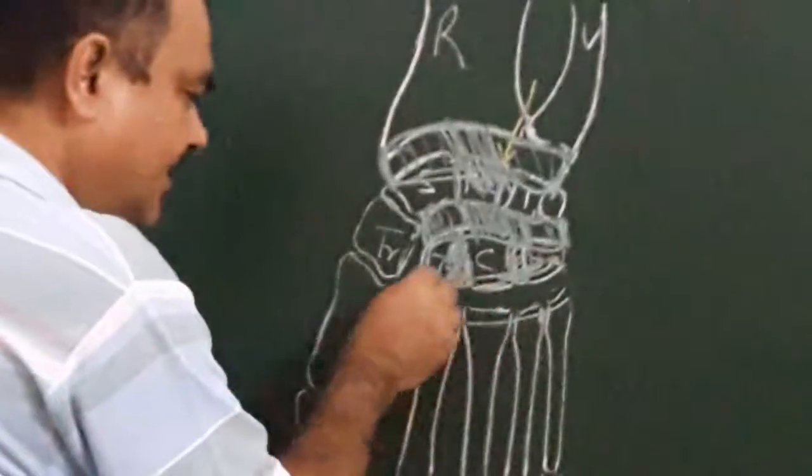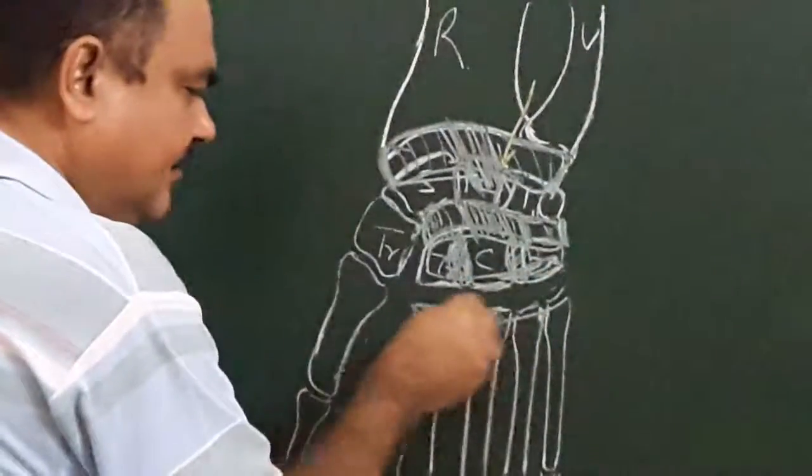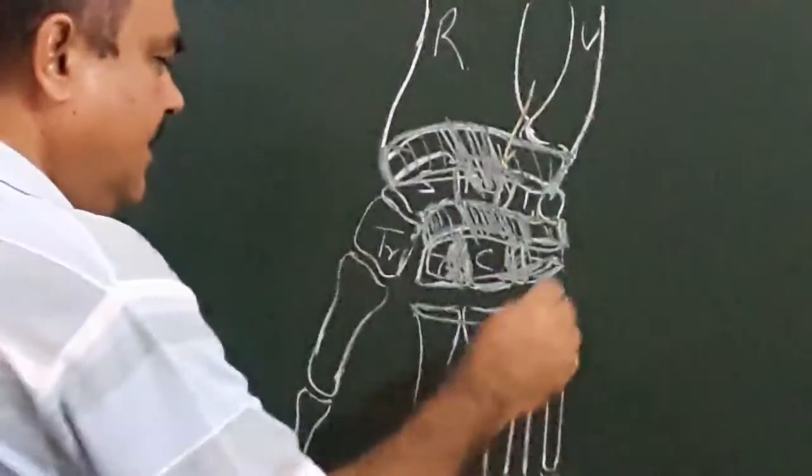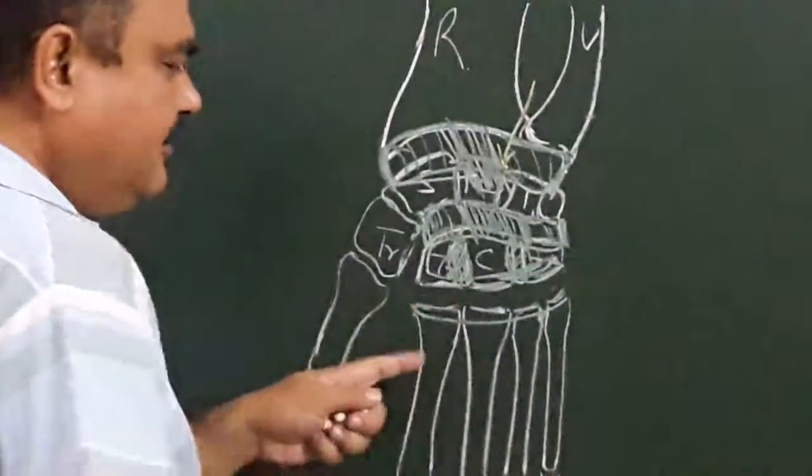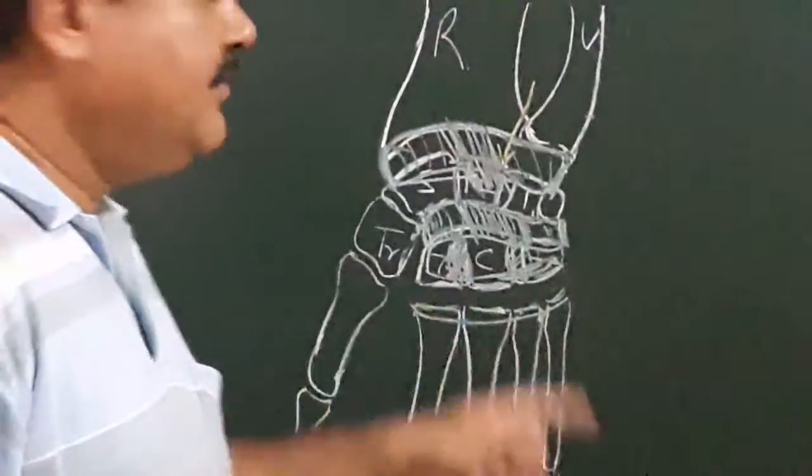Here, these are articular surfaces. These two articular surfaces form the joint.